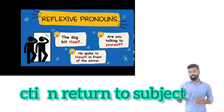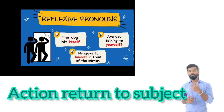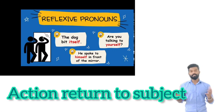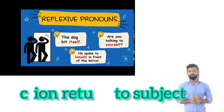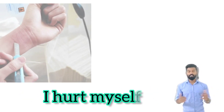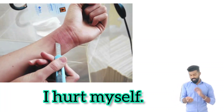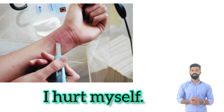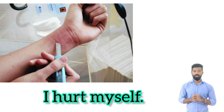Reflexive pronouns: when the subject is doing an action and it is reflected back to the subject — that means if I do some action and it comes back to me, it is reflexive to me. For example, 'I hurt myself.' Here, when I hurt myself, the pain comes back to me. So it is reflexive to me. This is the easiest way to identify a reflexive pronoun.